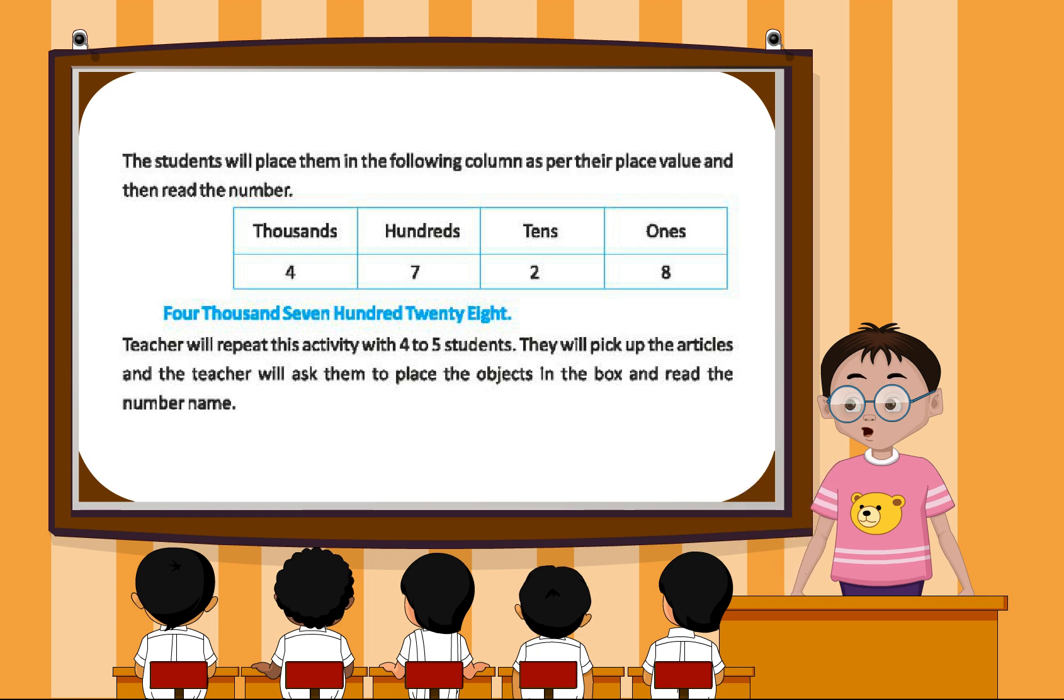Thousands: four. Hundreds: seven. Tens: two. Ones: eight. Four thousand seven hundred twenty-eight. Teacher will repeat this activity with four to five students.